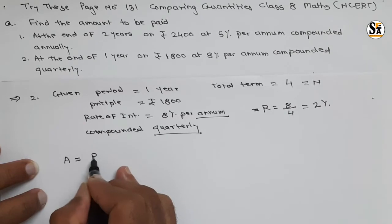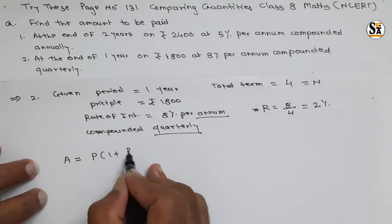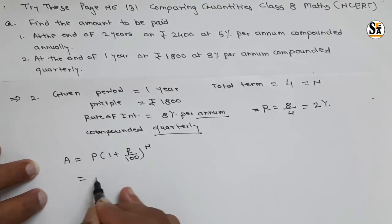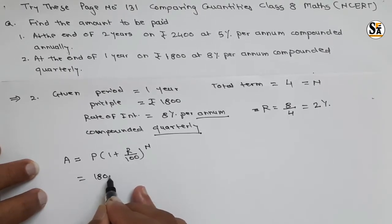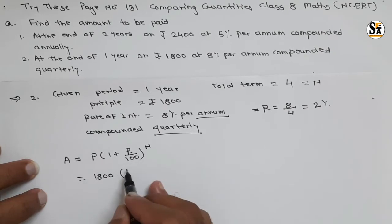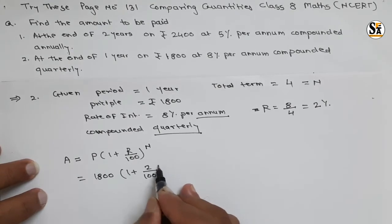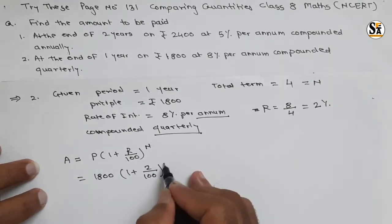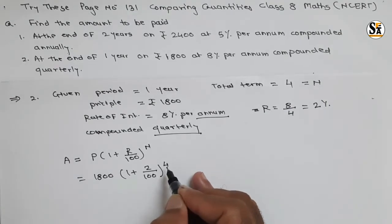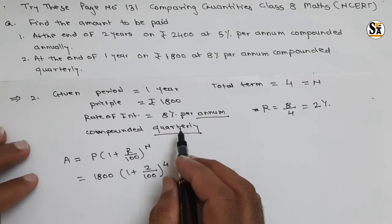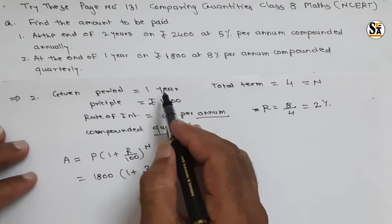Use this data and write the formula: A = P × (1 + r/100)^n. P is rupees 1800. Rate r we have calculated as two percent. So: 1800 × (1 + 2/100) raised to n, and n is 4 - the number of terms is four because one term per quarter and total duration is one year.